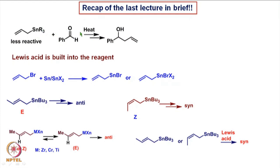What we did was the reaction of allyl tin compounds, or allyl stannins as they are called. Initially, we took an allyl tin compound of this kind and reacted it with an aldehyde, say benzaldehyde, under heating conditions to form the homoallylic alcohol. This required heating. But if we look at the reaction where the allyl tin species had a Lewis acidic character, which was prepared by reacting allyl bromide or allyl halide with tin or tin halide, then these species with inbuilt Lewis acidic character did not require heating to transfer the allyl group to the aldehyde, because there was a chelation between oxygen and the Lewis acidic part of the allyl tin compound.